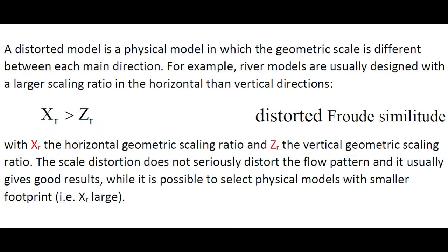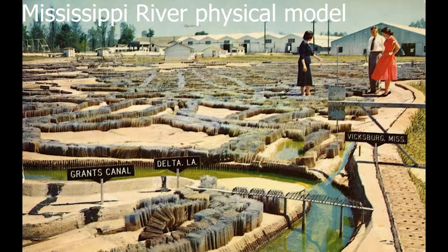A distorted model is a physical model in which the geometric scaling ratio is different between each main direction. For example, many river models are usually designed with a larger scaling ratio in the horizontal than vertical directions.